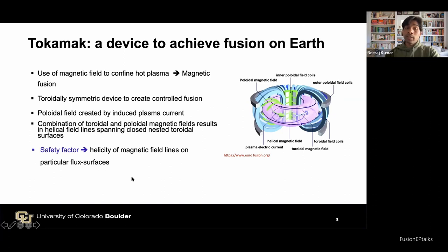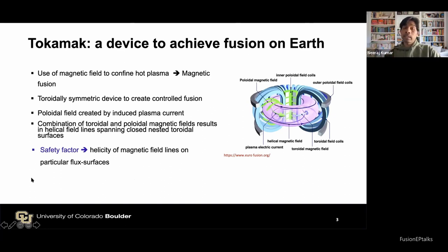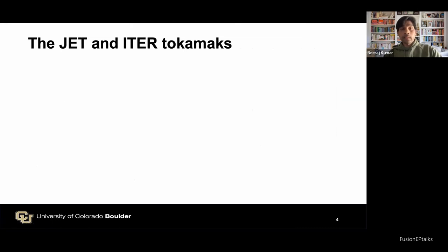The helicity of magnetic field lines on a particular flux surface is described by the safety factor q, defined using the minor and major radii (r and R) and the toroidal and poloidal magnetic fields B_phi and B_theta. In this thesis I simulated two tokamaks: JET, the presently largest running tokamak with a plasma volume of 100 cubic meters.